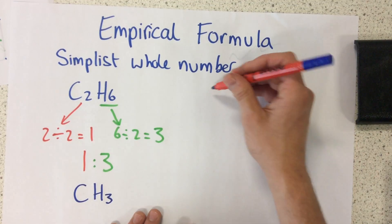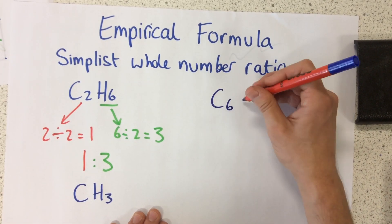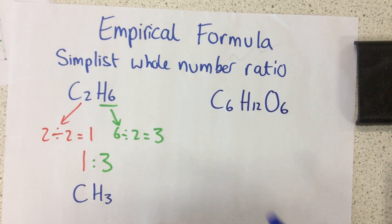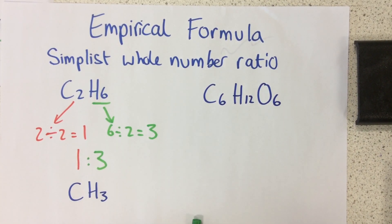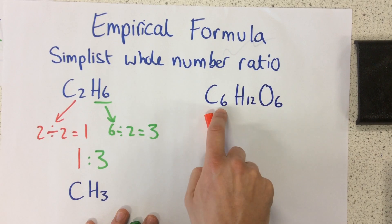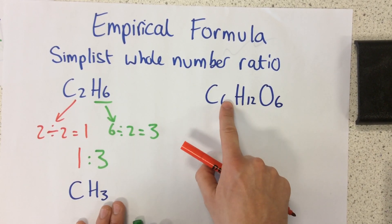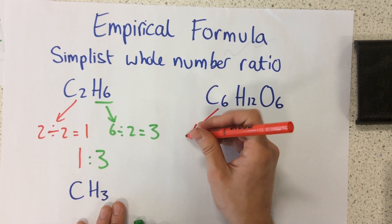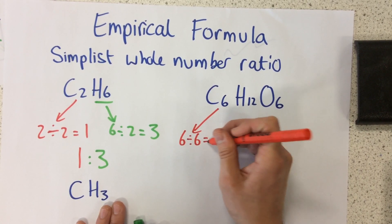Now we could even do this with more complex molecules such as glucose, C6H12O6. I've got to find the empirical formula of this right here. So the first thing I do again is I find the smallest number of all three of them, which is six. And what I need to do is six divided by six, which equals one.